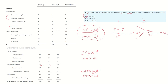Let's continue and calculate the quick ratio and current ratio. For company A, quick ratio is cash, marketable securities, and accounts receivable divided by current liabilities, which equals 0.42. For company B, quick assets — cash, marketable securities, plus accounts receivable — divided by current liabilities equals 0.8.